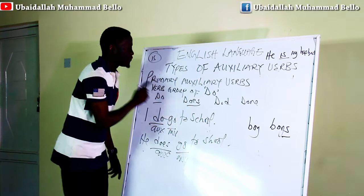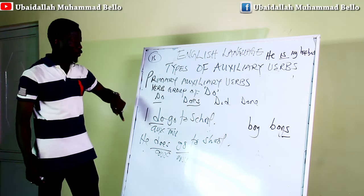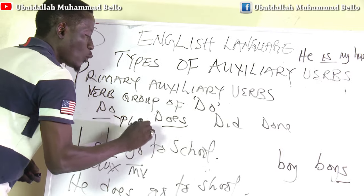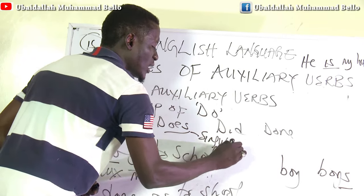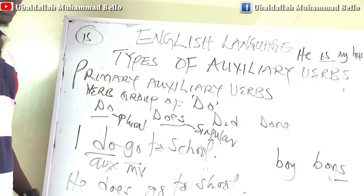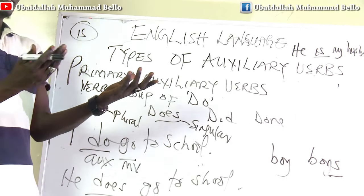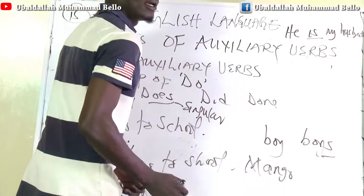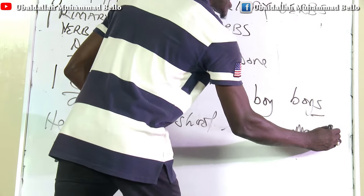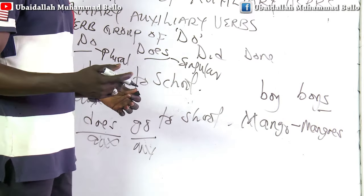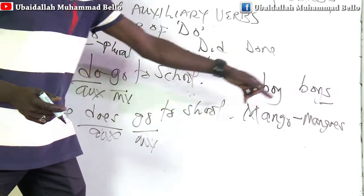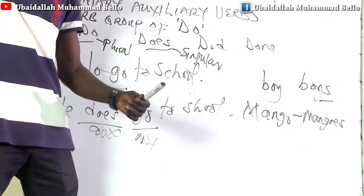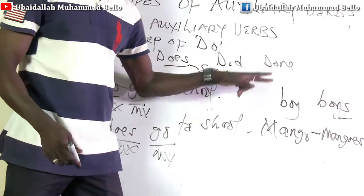Coming back to the group of 'do': we have 'do' and we have 'does.' 'Do' is plural while 'does' is singular. Somebody will ask, why is it so — when we have '-es,' isn't it supposed to be plural? Just like we have 'mango' and the plural form is 'mangoes.' When we add '-es,' '-oes,' or '-ies' to a noun, we are moving it from singular to plural. Yes, but that is only for nouns.